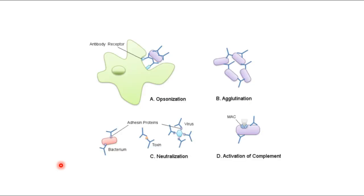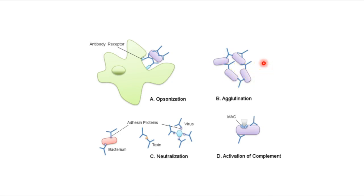Here's what antibodies are capable of doing. Opsonization is new — we didn't address it previously. We did address agglutination: the variable region binds to an antigen on one cell and an antigen on another, connecting them like a bridge, causing clumping. With enough antibodies connecting cells, you get agglutination. Precipitation is similar but involves cell fragments or single antigens, not whole cells.